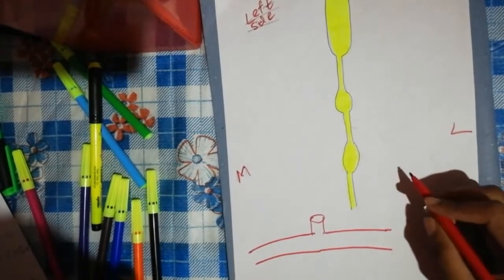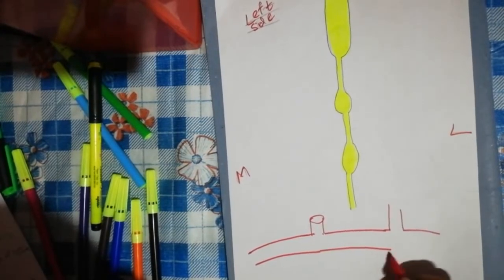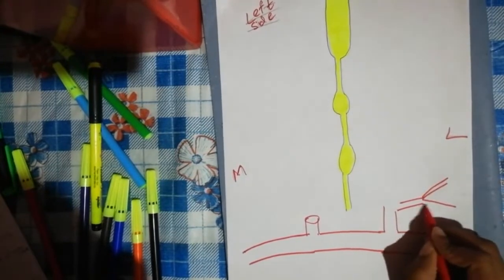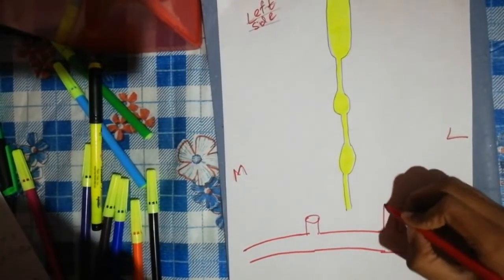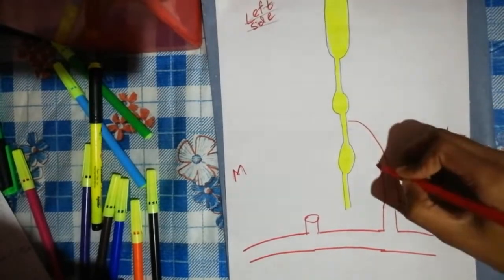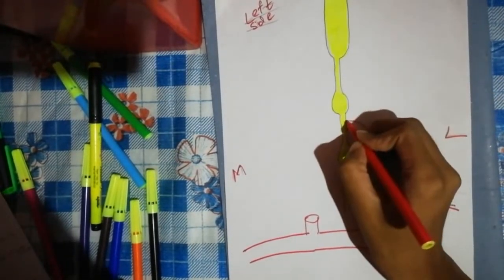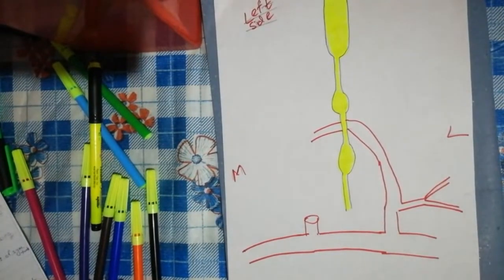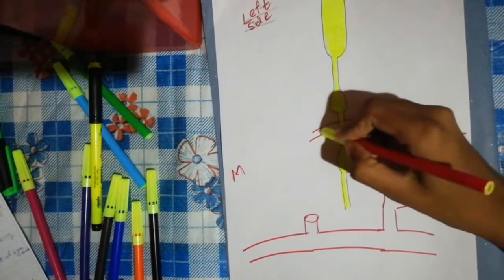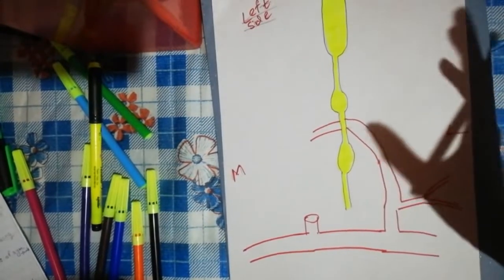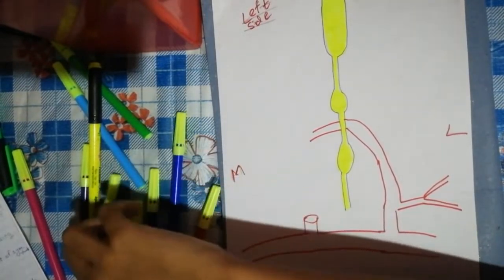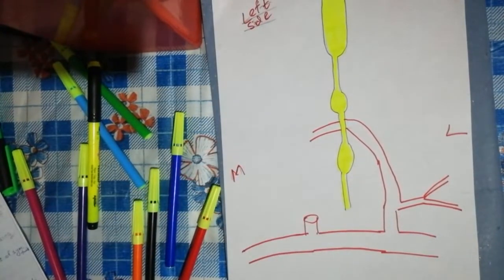The next branch is the costocervical trunk, with branches including the dorsal scapular and suprascapular arteries. The inferior thyroid artery also arises here, and it crosses the cervical sympathetic trunk posteriorly. Remember this, as it is also frequently asked in MCQs.